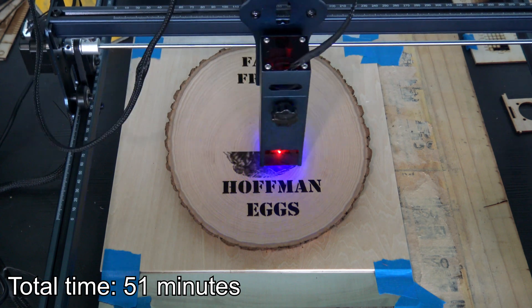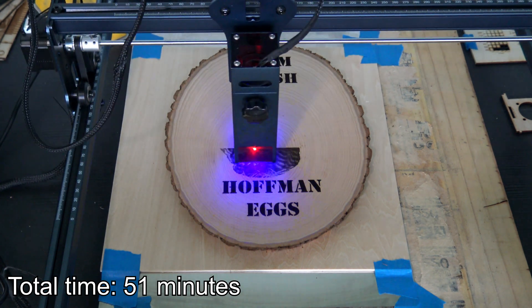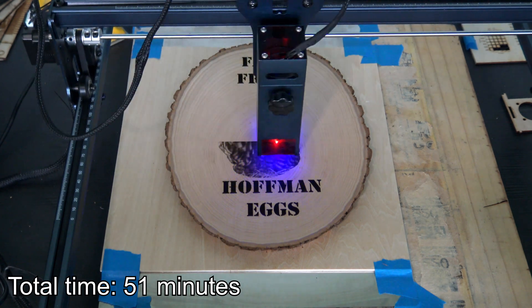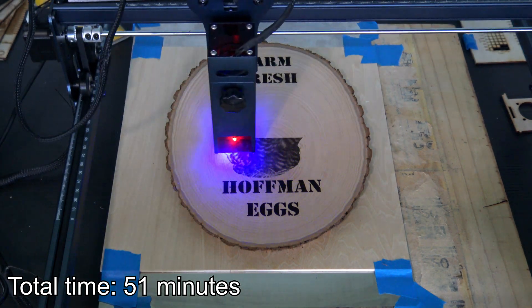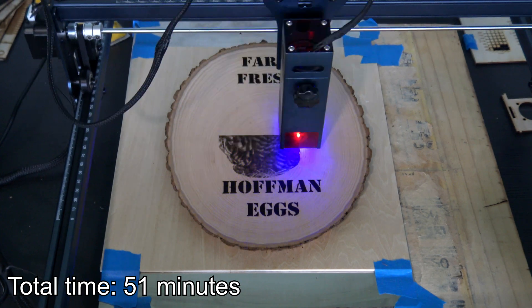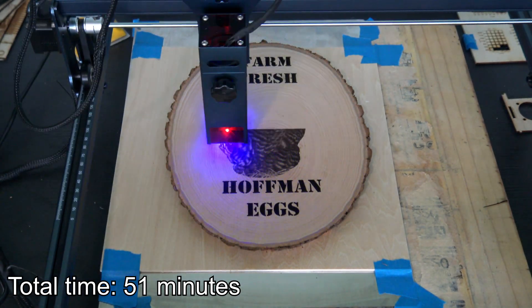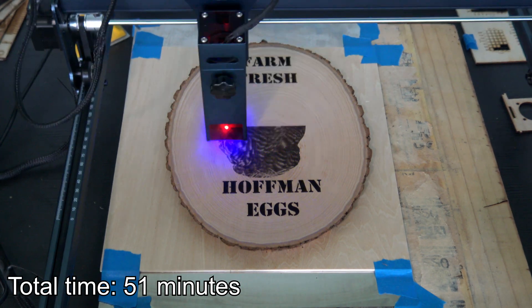The A5 M50 Pro is the top model of Atomstack's A5 line and sells for $475 USD. It is competitively priced compared to other engravers with similar work areas and diode powers. I think that anyone looking for a diode laser would be happy with their choice if they picked one of these up.